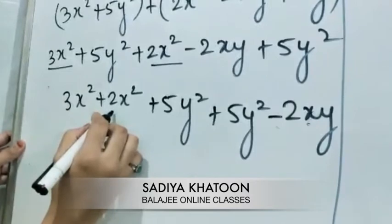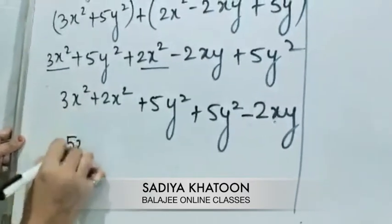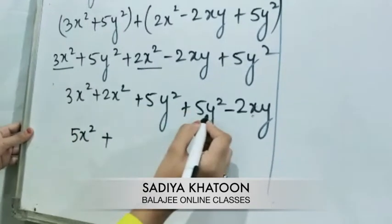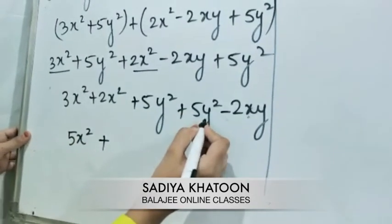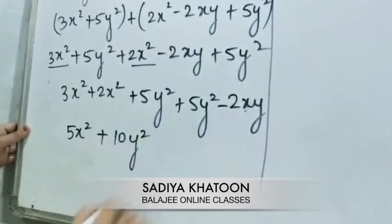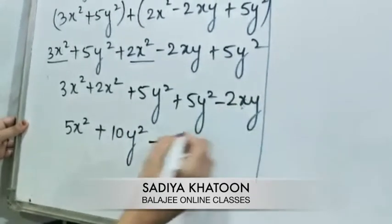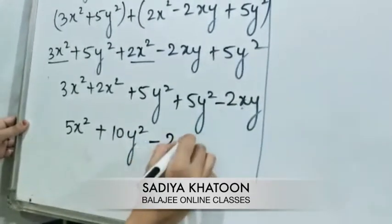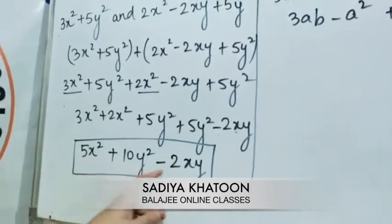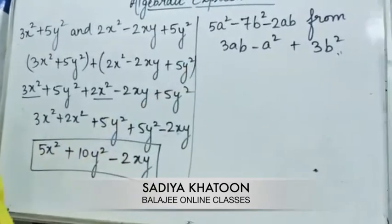3x squared plus 2x squared are both like terms, so we add them to get 5x squared. 5y squared and 5y squared are like terms, so we add them to get 10y squared. Minus 2xy has no like term, so it is written as it is. The final answer is 5x squared plus 10y squared minus 2xy. Now let's take an example of subtraction.